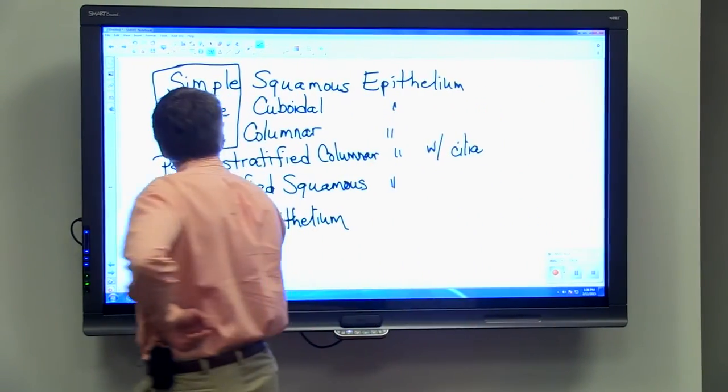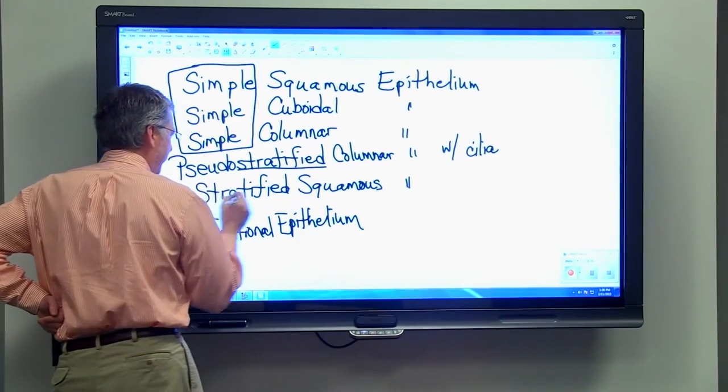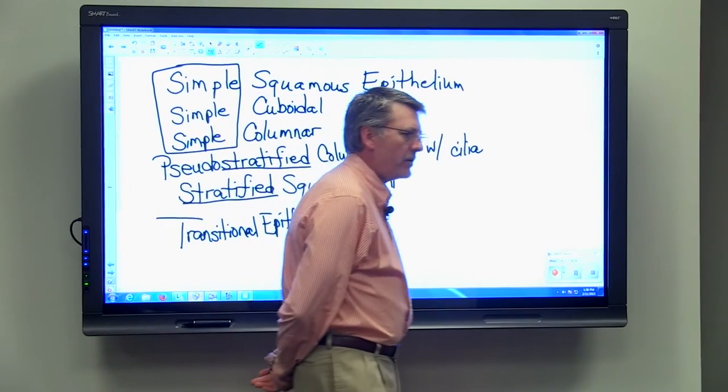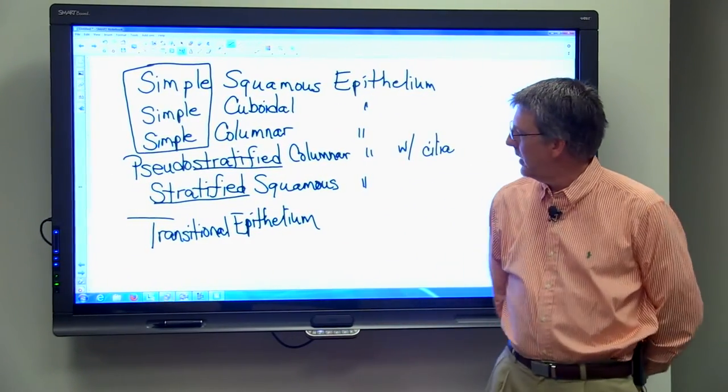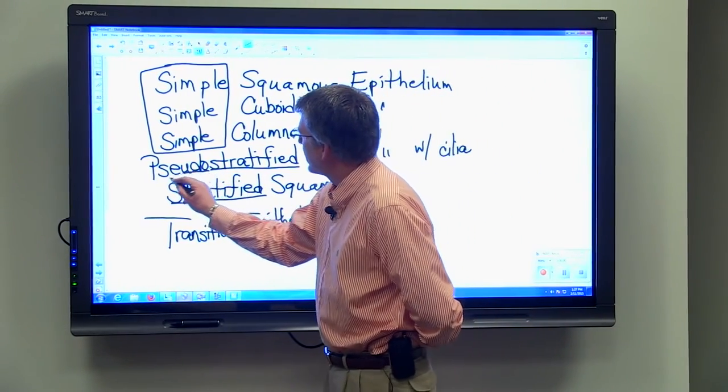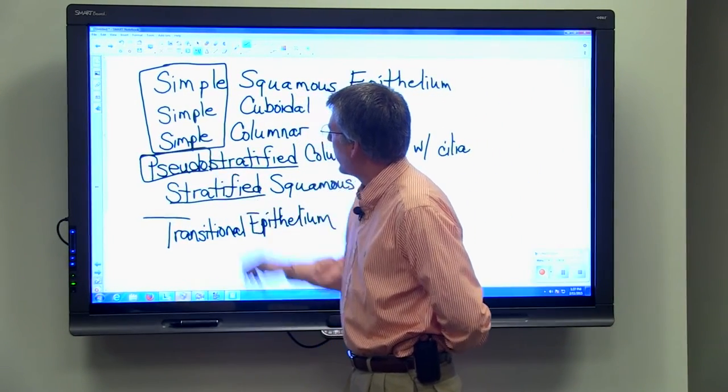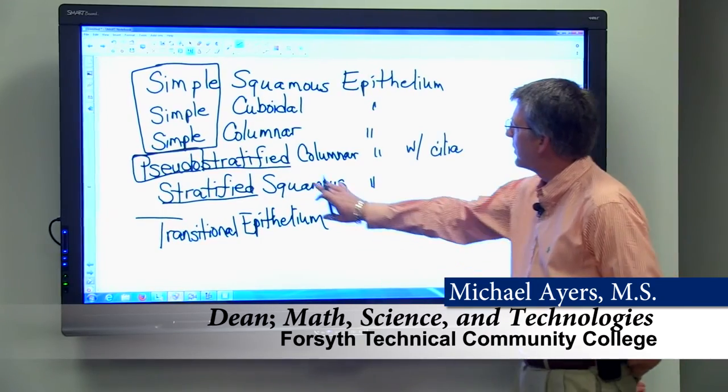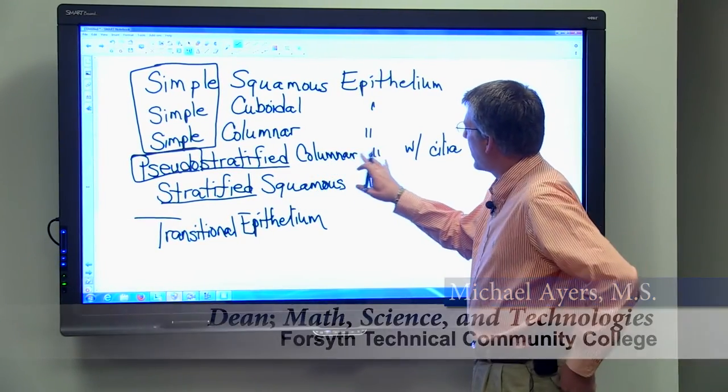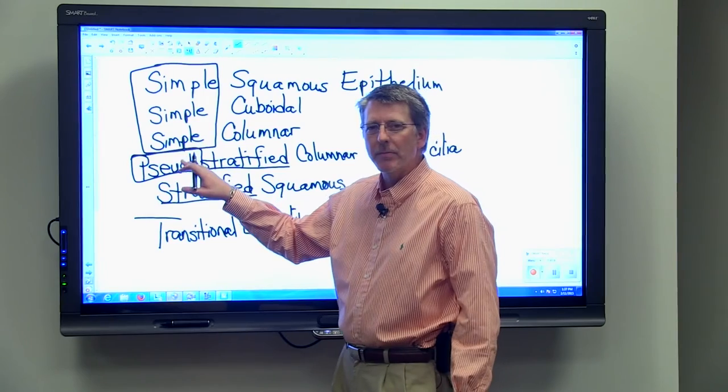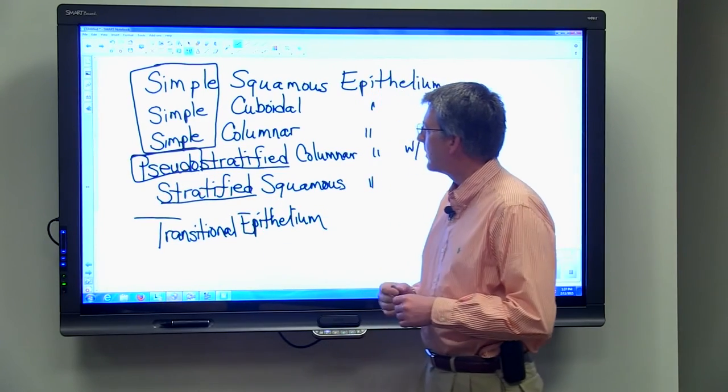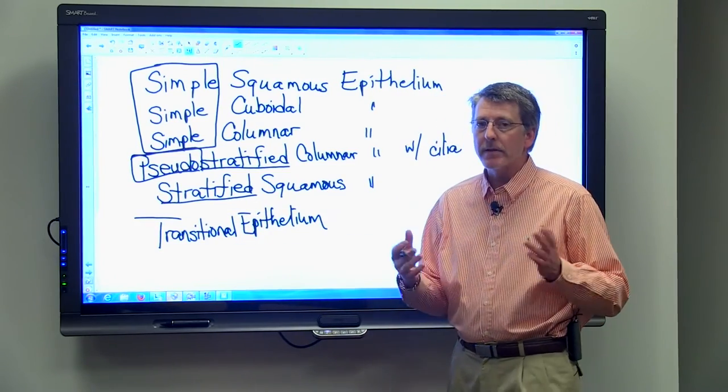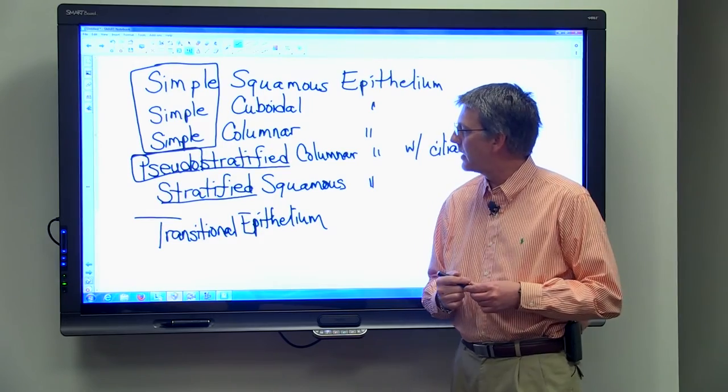Then, the next two have the word stratified in there, and earlier we said that a stratified tissue is one that has layers of cells. Now, if you think about the term pseudo, you may remember talking about pseudopodia perhaps if you were looking at cells earlier. That term pseudo means false, and so pseudostratified columnar epithelium with cilia is actually a simple tissue, but it appears layered, and we'll talk about why it appears layered in just a few minutes. Then the fifth tissue is stratified squamous, and it does contain different layers of cells.